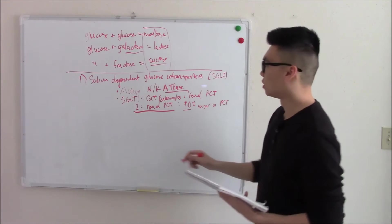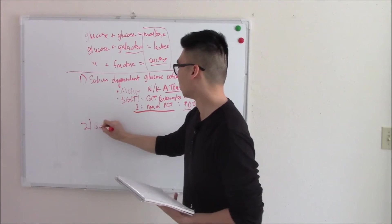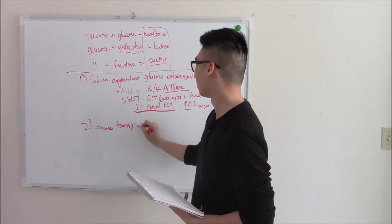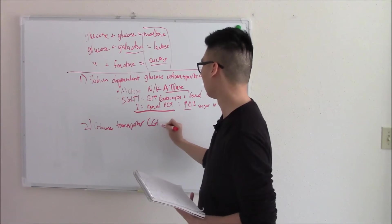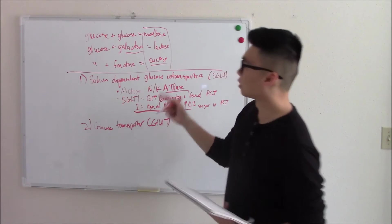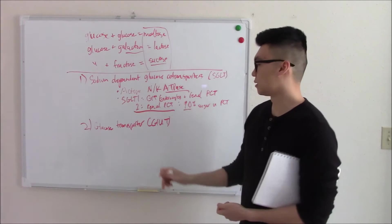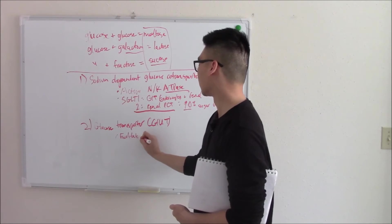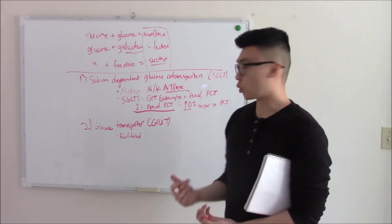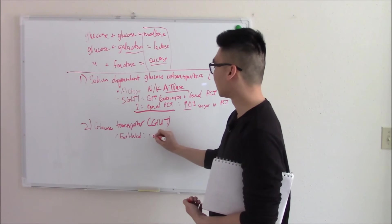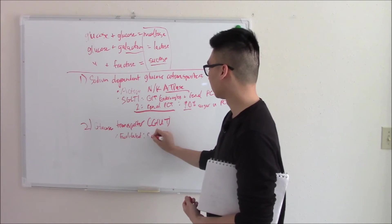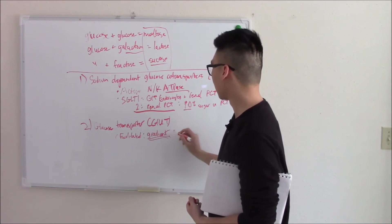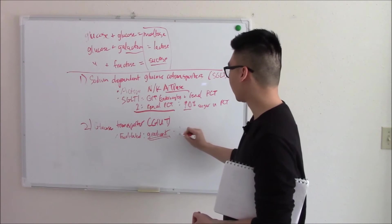Your second group is going to be your glucose transporters, also known as GLUT. Now GLUT is different from the first class because it is facilitated, meaning it doesn't need energy. It doesn't need ATP. It's just the gradient. It depends on the gradient. It flows down that gradient. And because it flows down a gradient, it is bi-directional.